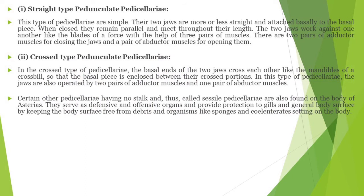In the straight type of pedicellaria, there are two jaws attached to the basal pieces. When closed, they remain parallel and meet throughout their length, and the two jaws work against one another like the blades of forceps with the help of three pairs of muscles. In the cross type of pedicellaria, the basal ends of the two jaws cross each other like the mandibles of a crossbill, so that the basal piece of each is enclosed between the crossed portion.